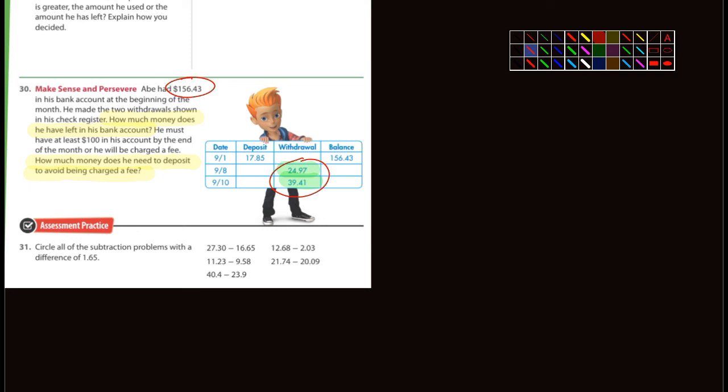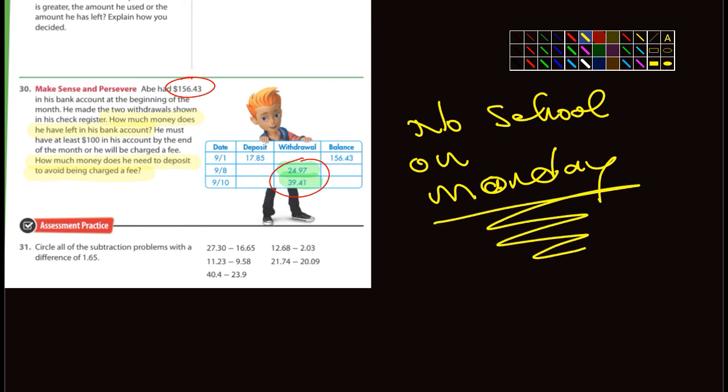Because remember, no school on Monday. That's an 'o' not an 'a'—on Monday. No school on Monday, it's Labor Day. So the next time we will meet will be on Tuesday. We will grade this on Tuesday. Okay, all right you guys, that's it, and I'll see you tomorrow.